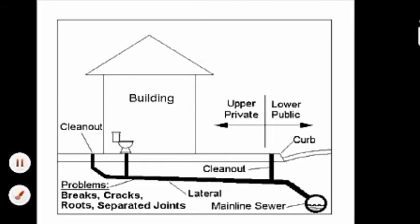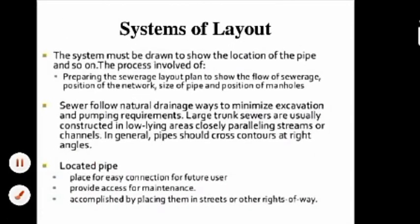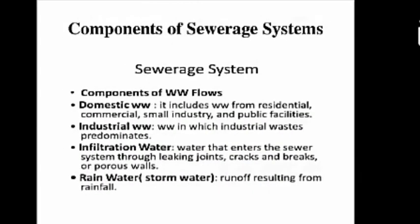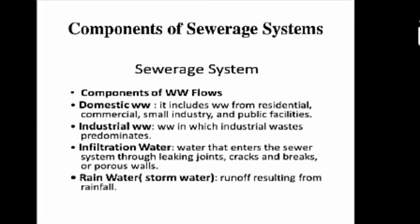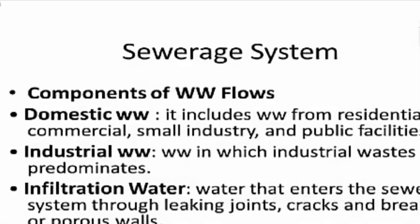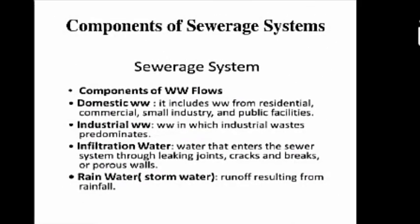We discussed different types of components of sewage in a system: domestic wastewater, industrial wastewater, infiltration water, and rainwater — which is runoff from rain, also known as storm water. Water entering the sewer through porous walls is infiltration water. Water liberated from industries is industrial wastewater. Water liberated from domestic needs is domestic wastewater.